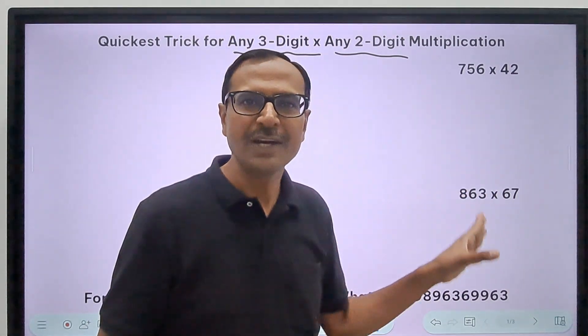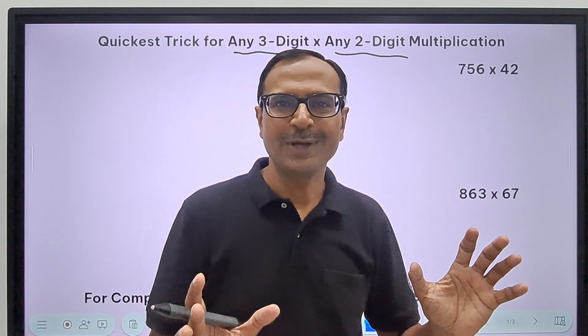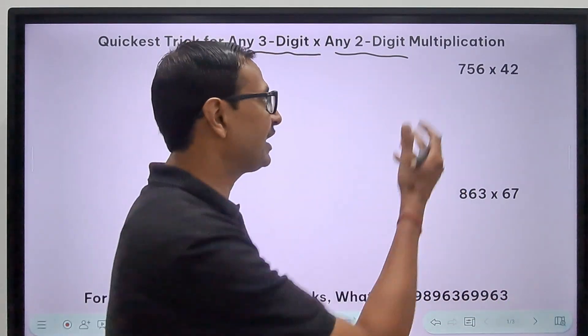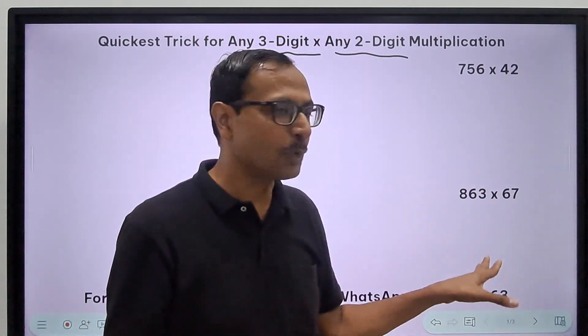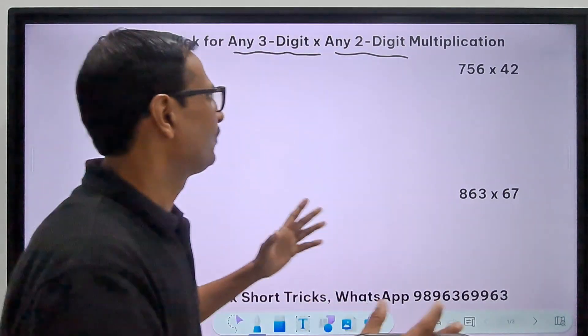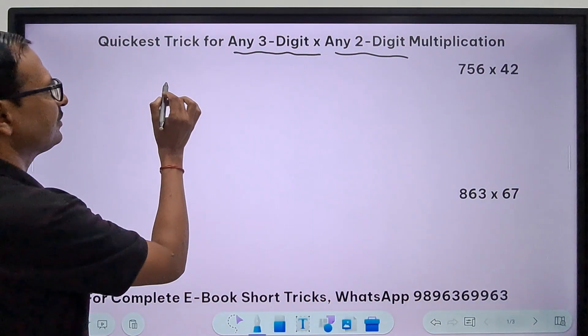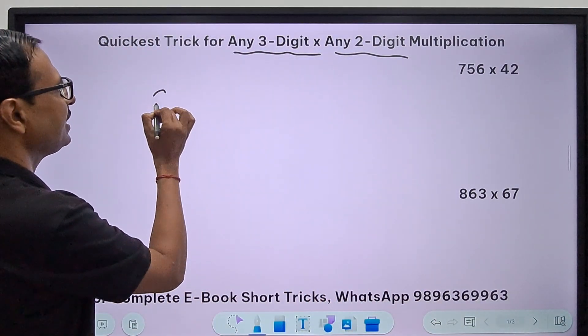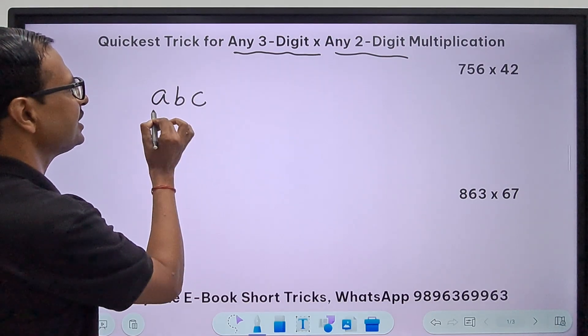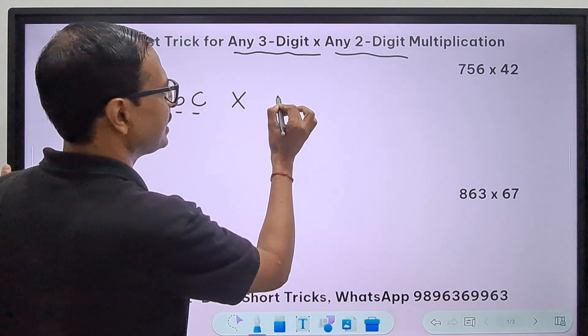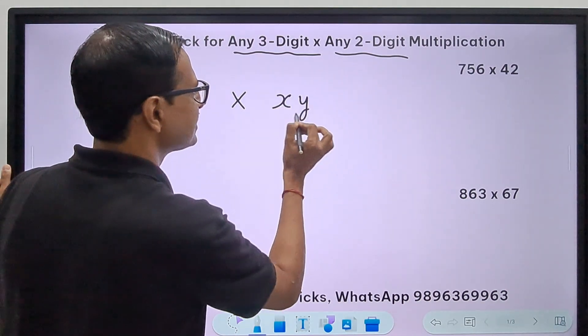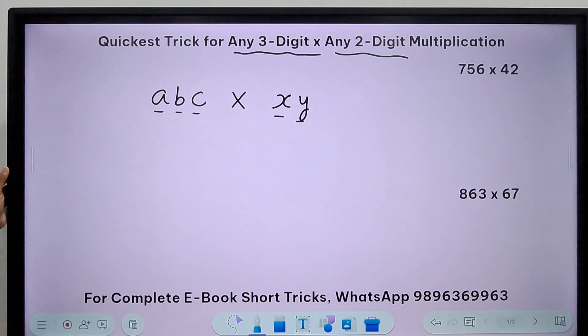Let me tell you the concept first and then we'll come back to these questions and check how much time we're taking to get to the product. Let's assume we have a number abc, a three-digit number, and we're trying to multiply it by another number, say xy, a two-digit number.